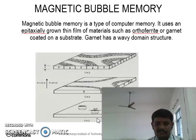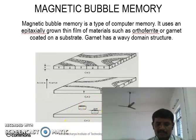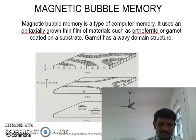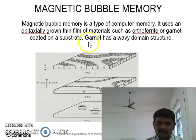These small circular areas of the domains are called bubbles. The generated magnetic bubbles are stable in a particular applied field. When the field reaches a high value, the magnetic domains change into magnetic strips, and hence a decrease in bubble radius takes place.